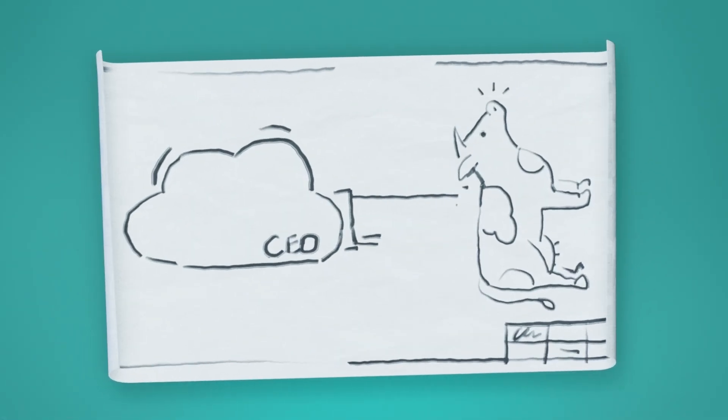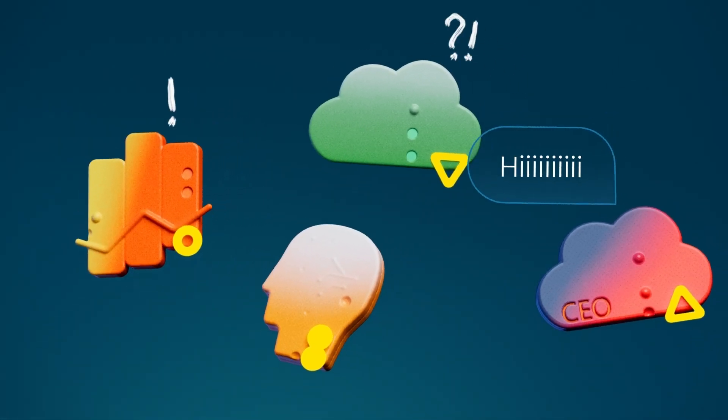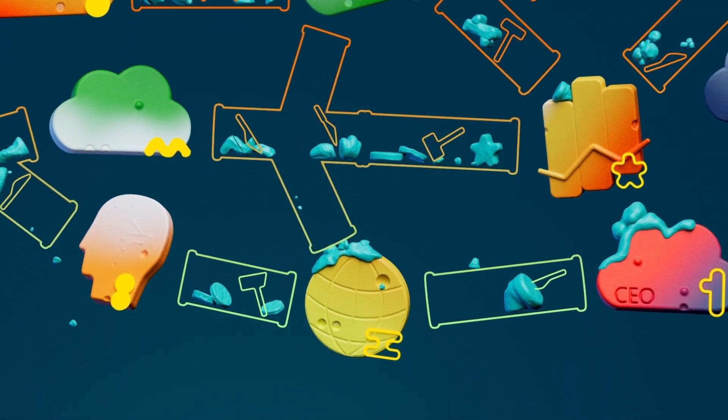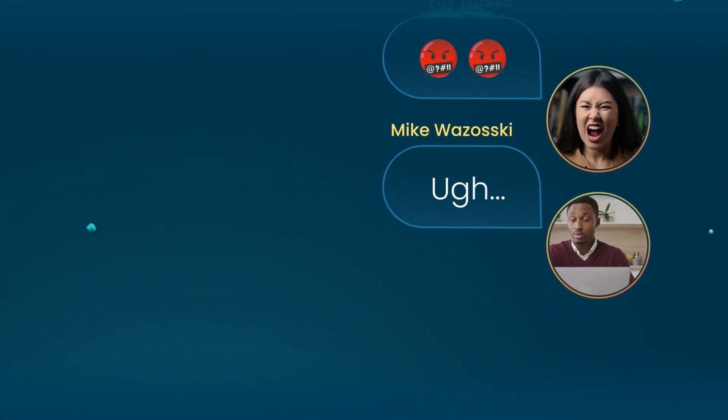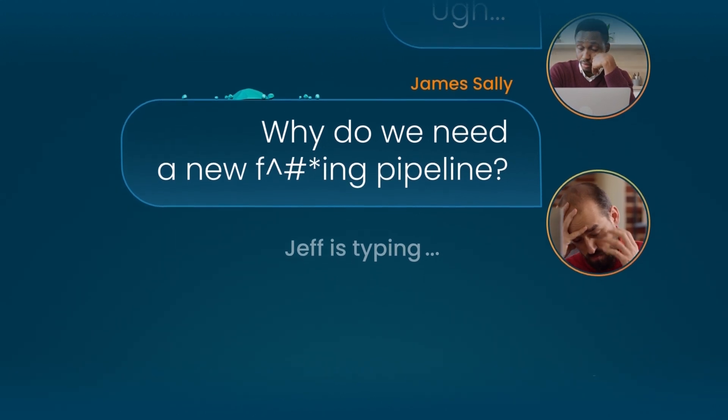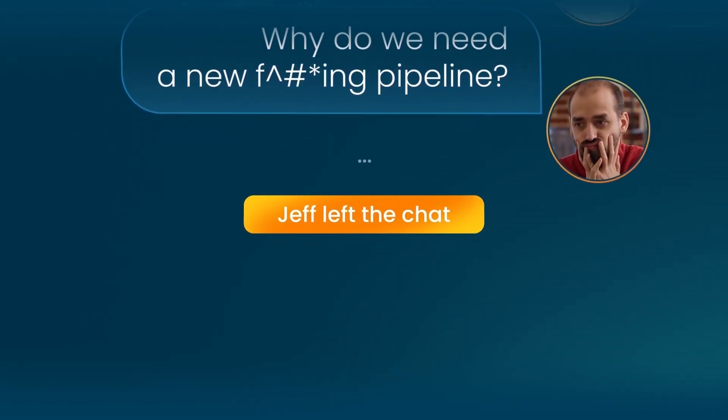But what about the use cases you didn't define in advance? The destinations you didn't anticipate? What about the whims of the executive team that you try to explain can't be addressed overnight, because you need to build a new pipeline, and they ask why do we always need a new fucking pipeline, and you say that's just the way it works, but deep down inside you're thinking, why do we always need a new fucking pipeline?